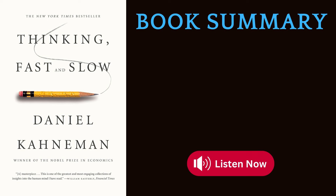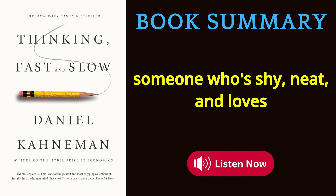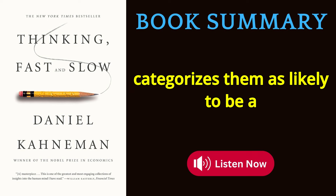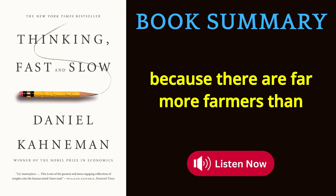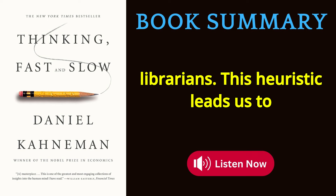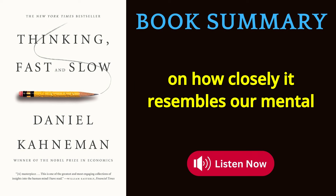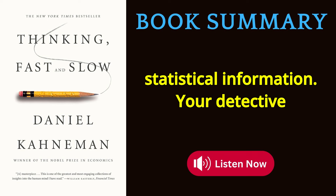You then encounter the representativeness heuristic. You meet someone who's shy, neat, and loves libraries. Your brain immediately categorizes them as likely to be a librarian, even though statistically they're more likely to be a farmer, because there are far more farmers than librarians. This heuristic leads us to judge the probability of something based on how closely it resembles our mental prototypes, often ignoring important statistical information.